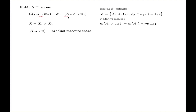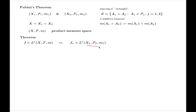In relation to this product measure space, we have what is known as Fubini's theorem. The theorem states that a function is integrable with respect to the product measure space if and only if a special function f_x is integrable with respect to the second measure space, where f_x is defined by fixing the first variable in the original function f of two variables, which lives on the direct product universal space.